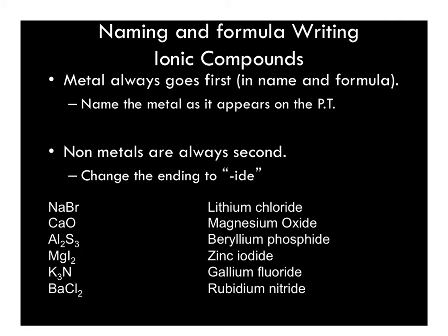Naming and formula writing for ionic compounds will be a little tedious at first, but once you figure it out, it goes smoothly. When looking at formulas, naming is easy: the first name is normal — it's the metal. So in the first example, we have Na, which is sodium. The nonmetal gets an -ide ending, so instead of Br being bromine, we say bromide. So this one is sodium bromide.